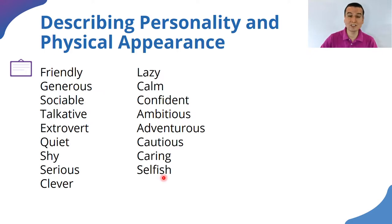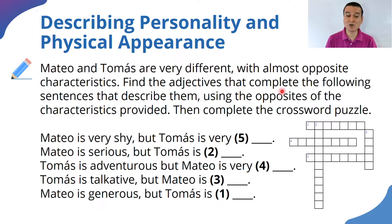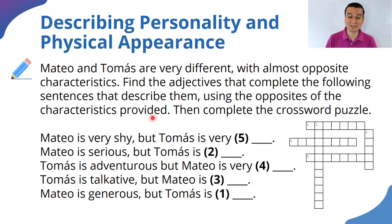Selfish is a word we use when a person doesn't want to share what they have. Now I have some simple practice activities for you. For the first one, you have to think about a word — I have an image to help you. Mateo and Tomas are very different, with almost opposite characteristics. Find the adjectives that complete the following sentences describing them using the opposite of the characteristics provided.